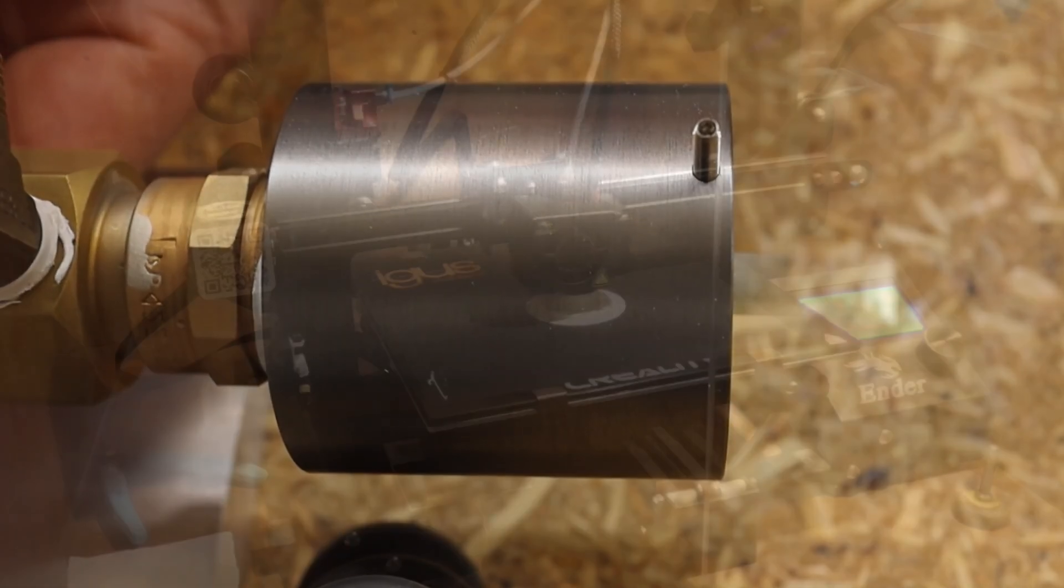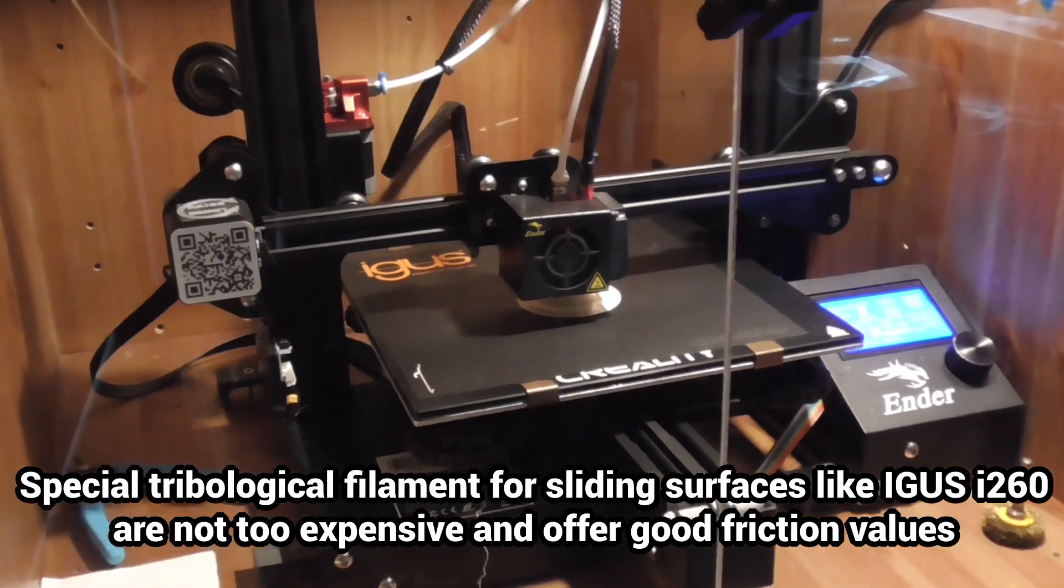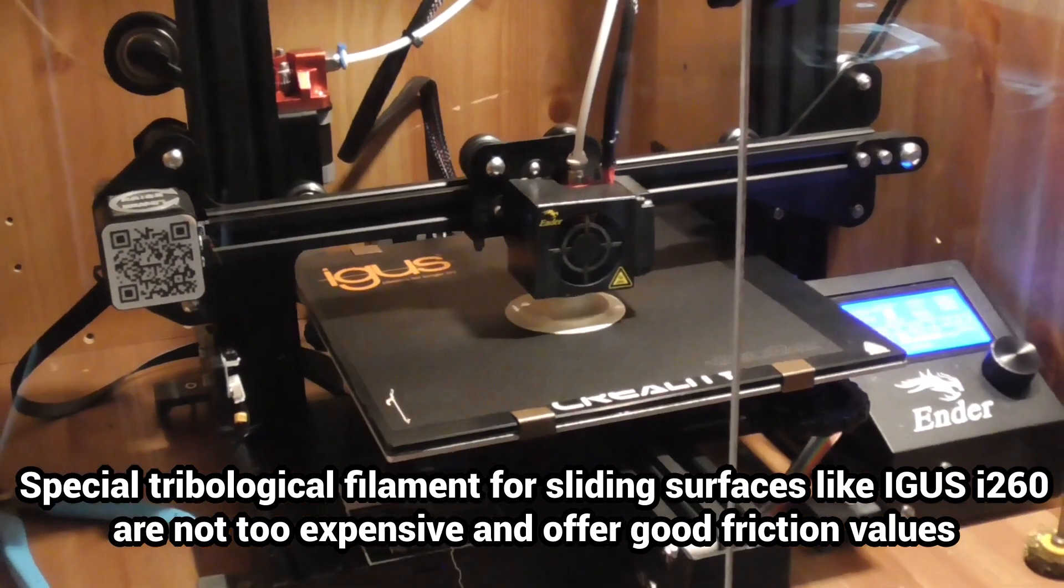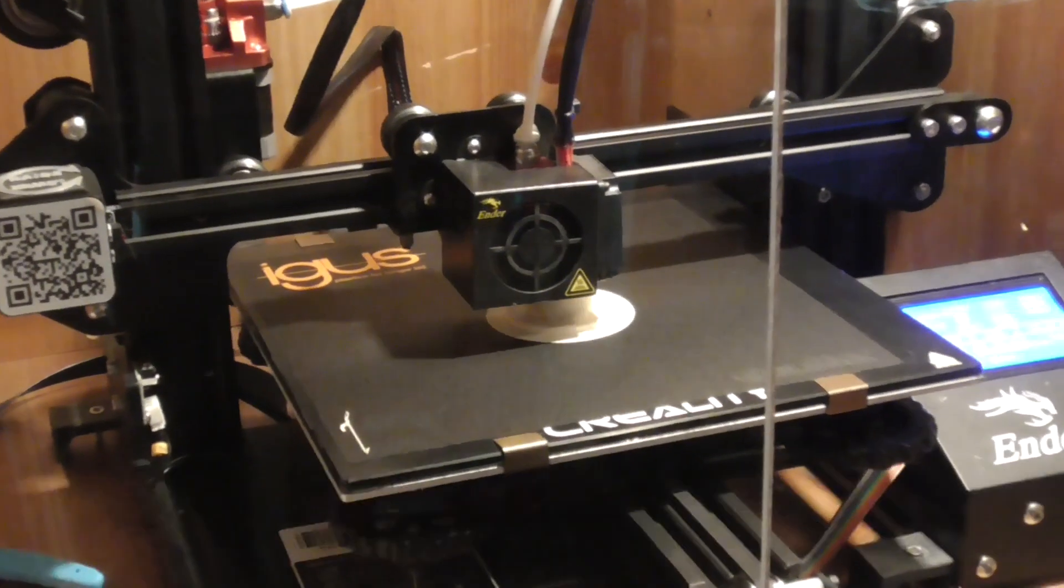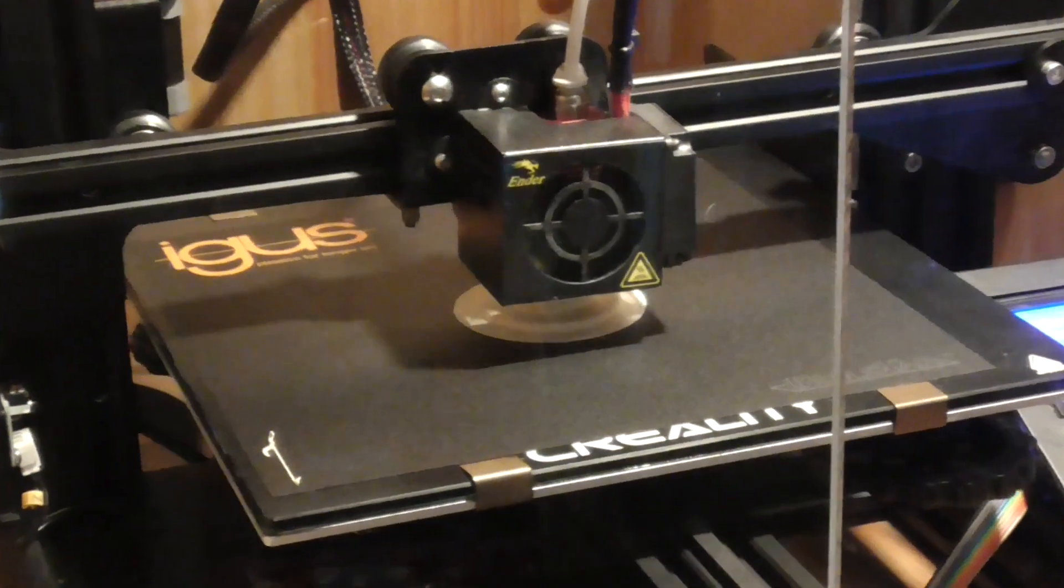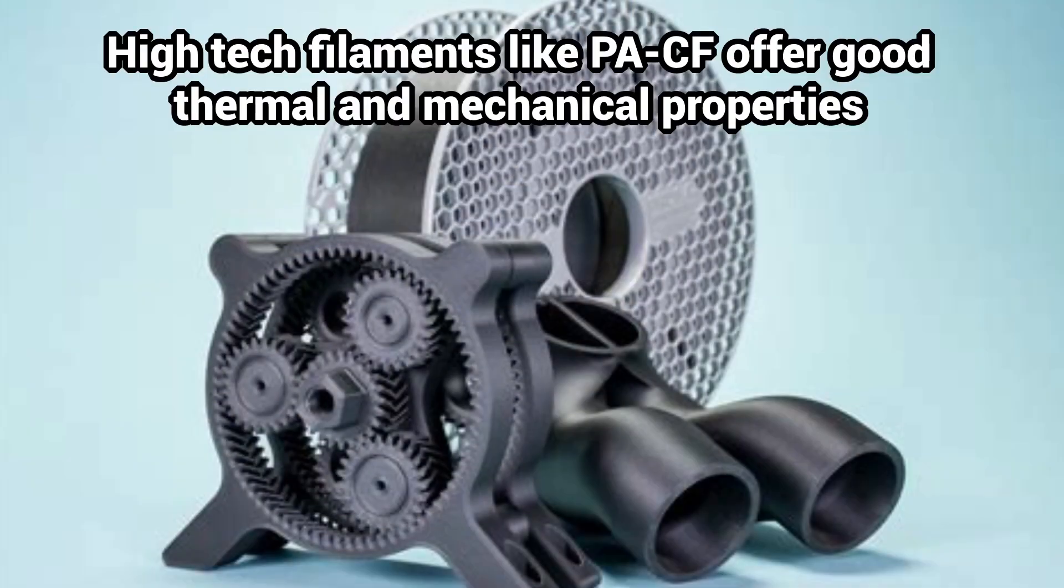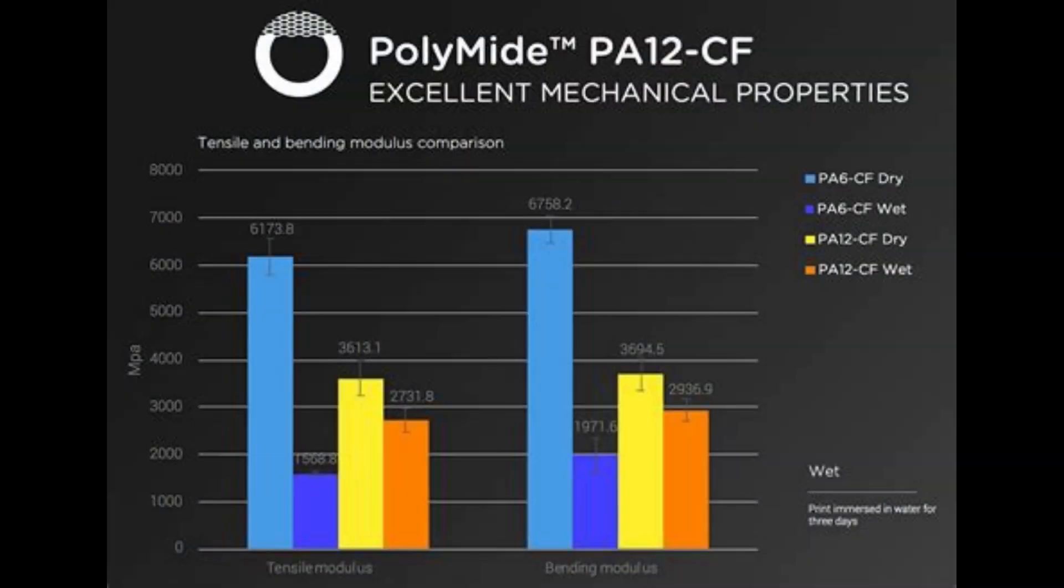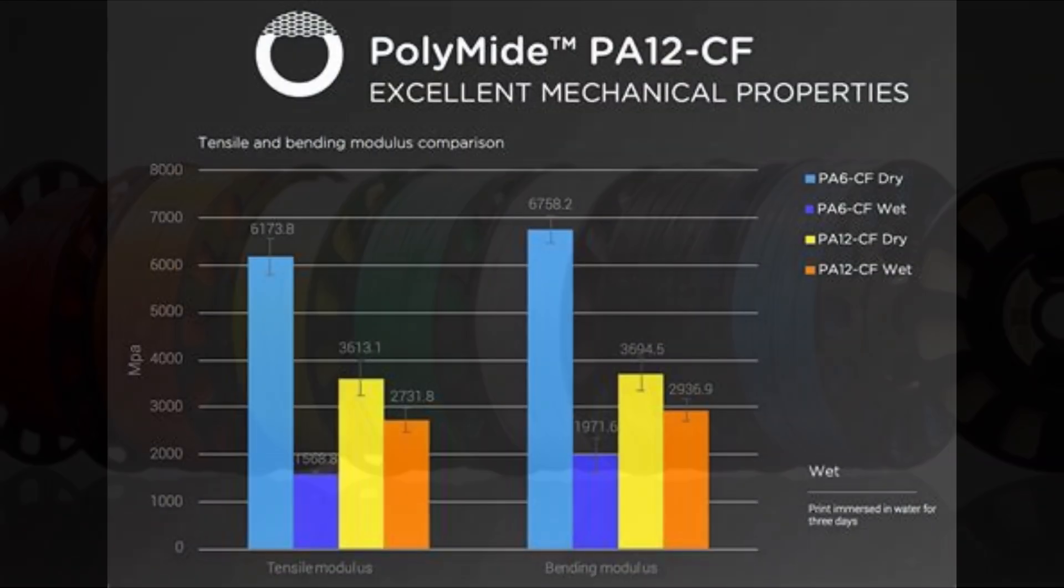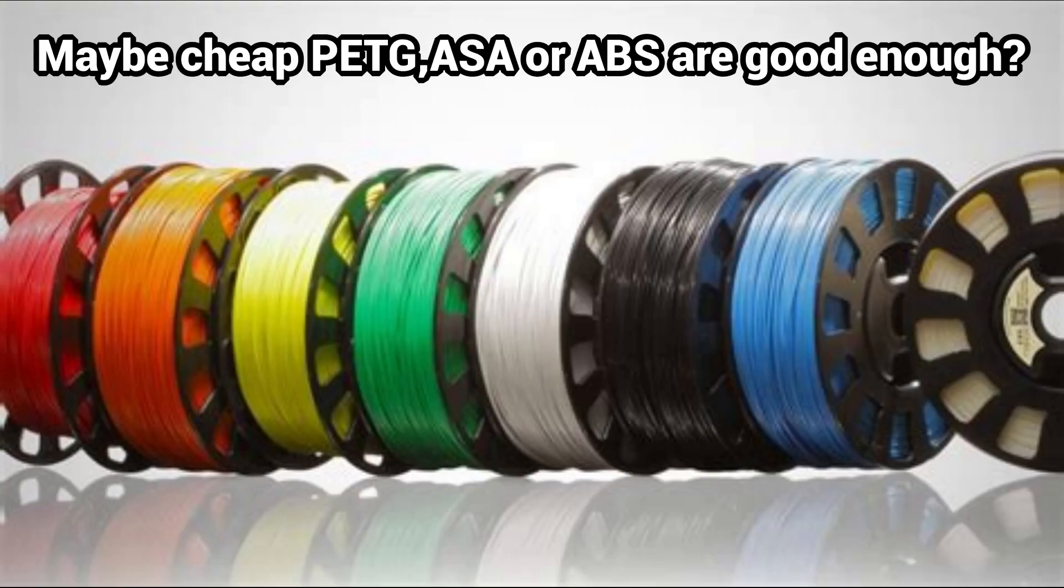It is also necessary to determine which filaments are best suited for this purpose. Do you need a high-performance filament such as carbon fiber reinforced polyamide, which is easy to print, heat resistant, and dimensionally stable but expensive, or is an inexpensive standard filament sufficient?